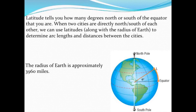One thing we'll have to make sure is true is that the two cities we're looking at will have to be directly north and south of each other. If they're not north and south, this won't work. And we're going to use a radius of the earth — we'll assume it's approximately 3,960 miles. So that's our understanding for these latitude problems.